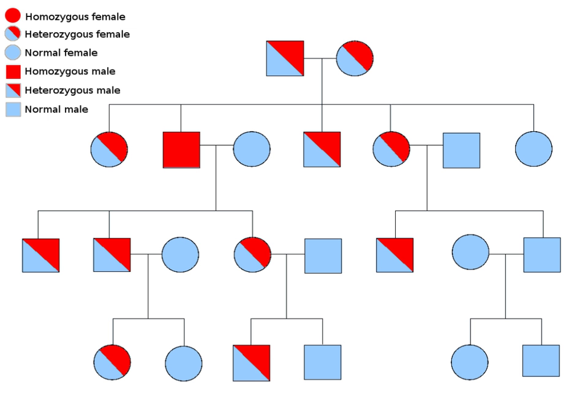An opposing school of thought, the Ovists, believed that the future human was in the egg, and that sperm merely stimulated the growth of the egg. Ovists thought women carried eggs containing boy and girl children, and that the gender of the offspring was determined well before conception.